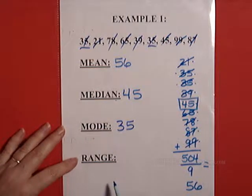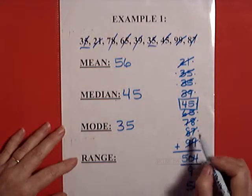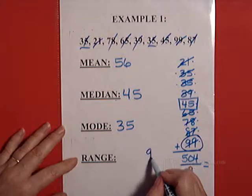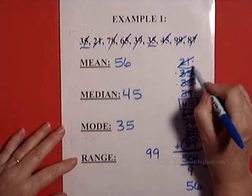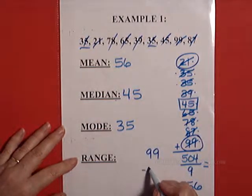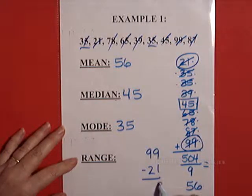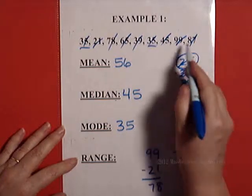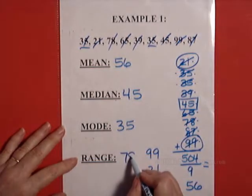The range, again, we think of a mountain range. We want to know the distance from the top to the bottom. So we take the top number, which is 99, and we subtract the small number, the bottom, which is 21. 9 take away 1 is 8, 9 take away 2 is 7. So the range of these numbers is 78.